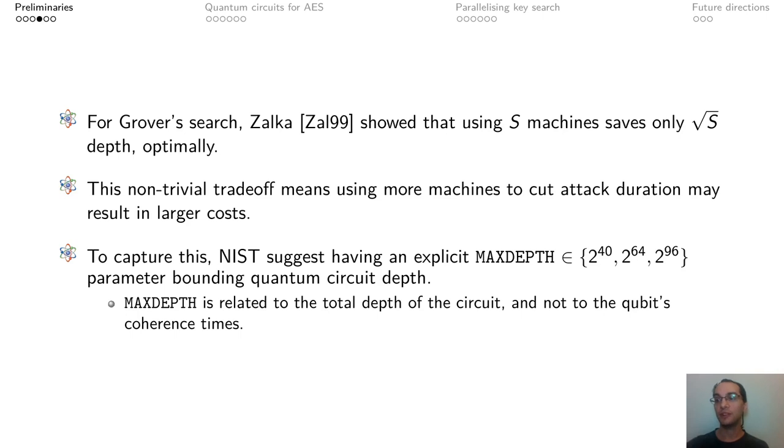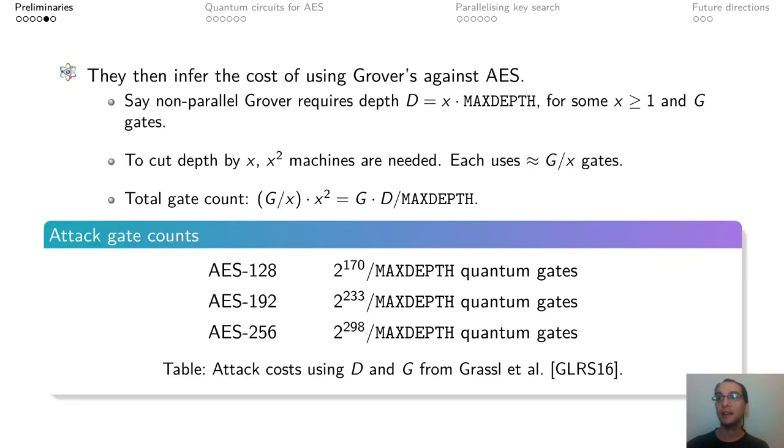To capture this, NIST suggested introducing a quantity called max depth, specifying how much total quantum computation can be realistically run as part of an attack. This does not relate to the coherence time of the qubits, but rather tries to capture the total amount of computation. NIST then uses the tradeoff result by Zalka to estimate the cost of breaking AES depending on max depth, based on the total depth D and the gate count G of running an unbounded Grover's search against AES.